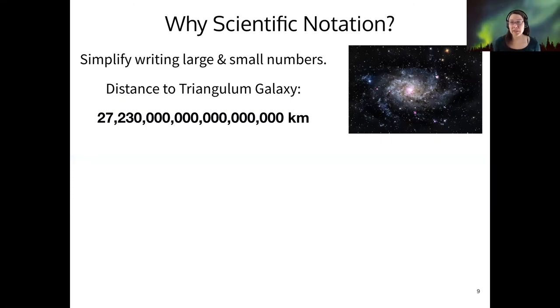So the reason we use Scientific Notation is to express very large or very small numbers, both of which we find in different fields of science. In astronomy, we're usually talking about the very large. In biology or physics, sometimes you'll come across the very small. So again, here's the distance to the Triangulum Galaxy written in standard form.